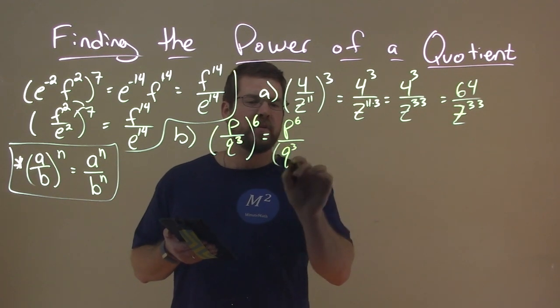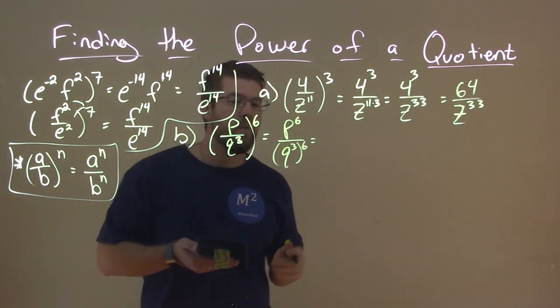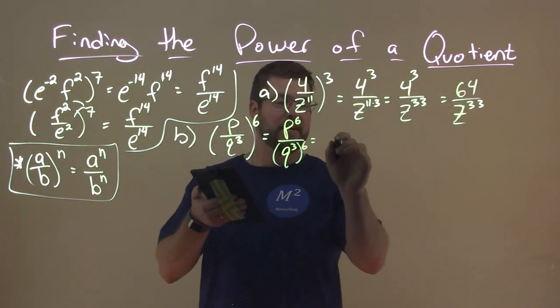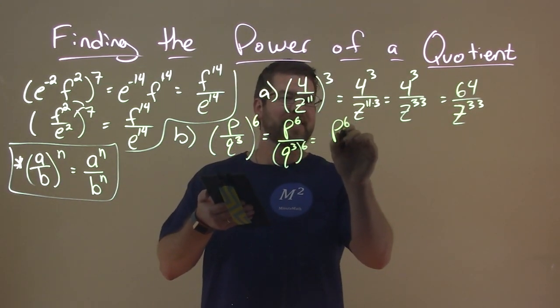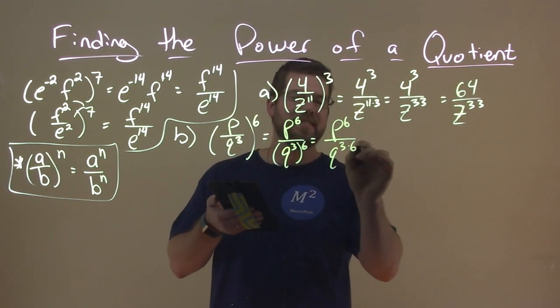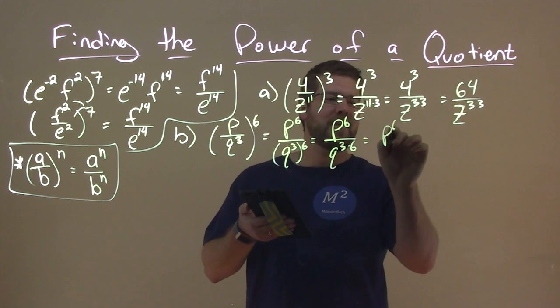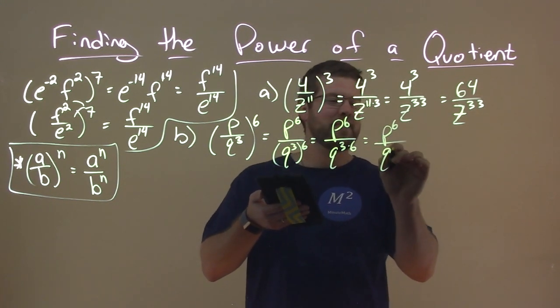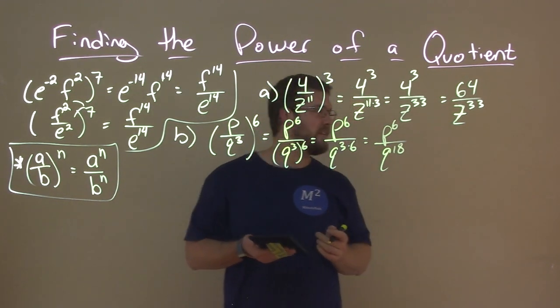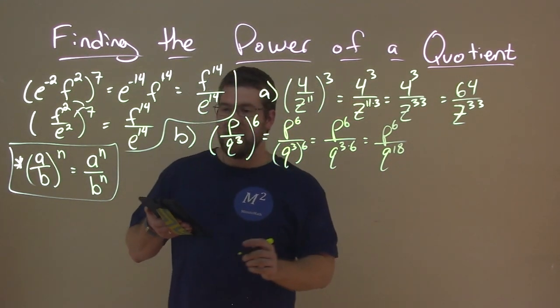q to the 3rd to the 6th power. Well, 3 times 6 we know is, well, let's multiply it out here. p to the 6. We'll show a little more steps. And that's q to the 3 times 6, our rules here. And then p to the 6th over q to the 18th, right? And there we have our answer. p to the 6th over q to the 18th.